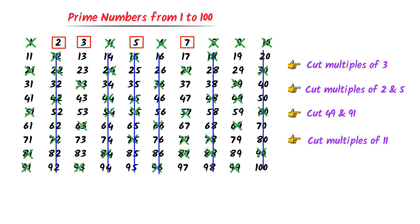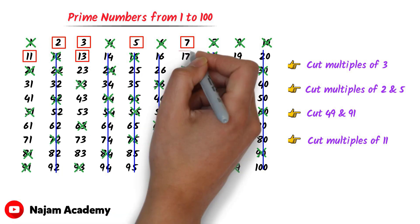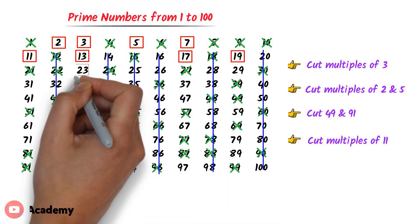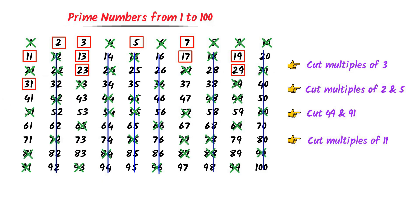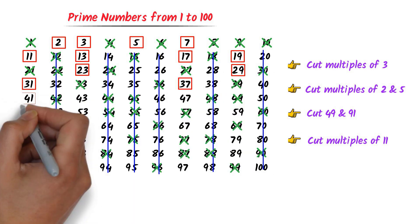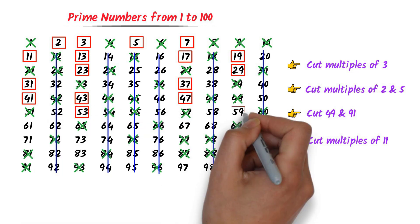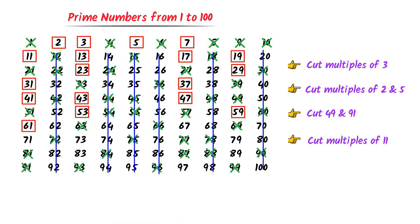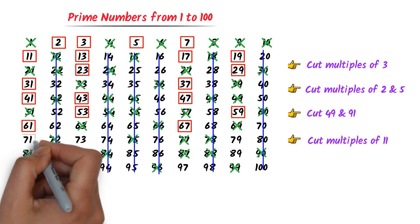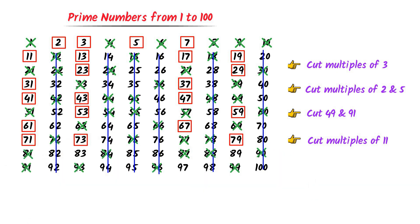All remaining numbers are prime numbers: 2, 3, 5, 7, 11, 13, 17, 19, 23, 29, 31, 37, 41, 43, 47, 53, 59, 61, 67, 71, 73, 79, 83, 89, 97.